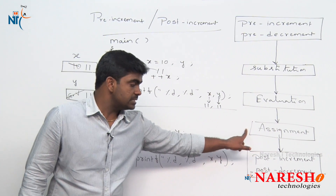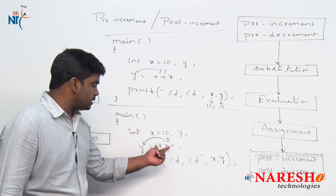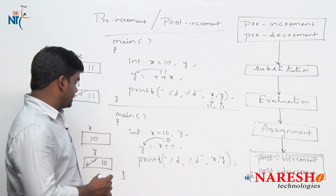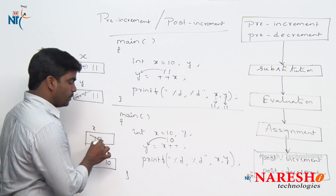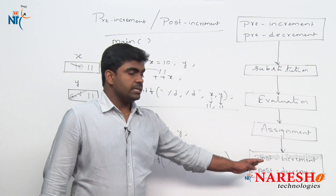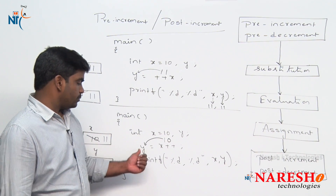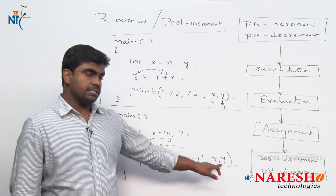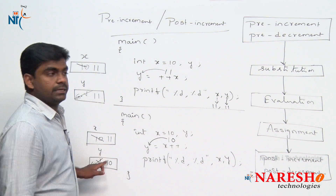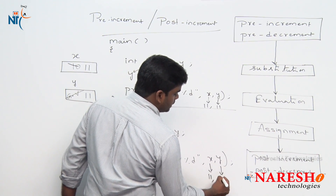Step 5: post-increment or post-decrement — yes, x++ is there, so increase x value: x becomes 11. All 5 steps are complete; expression evaluation is done. Then print x and y: x value is 11, y value is 10. So the output of Program 2 is x = 11, y = 10.